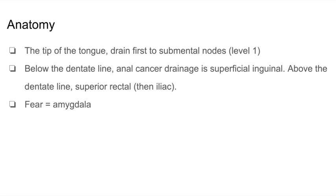For anatomy, USMLE exams love to test upper extremity anatomy such as the axillary nerve, radial nerve, and median nerve, but also lower extremity anatomy and some random anatomy points. One high-yield topic is lymph node drainage. The tip of the tongue drains to the submental nodes, which are level 1 nodes. Below the dentate line, anal cancer drainage is to the superficial inguinal nodes. Above the dentate line, drainage is to the superior rectal nodes, then to the iliac nodes.